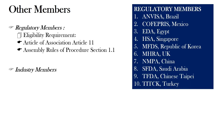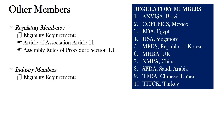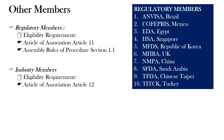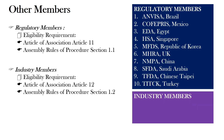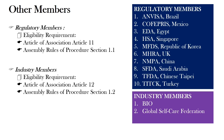Coming to the industry members: the eligibility requirements for industry members are given in Article of Association Article 12 and Assembly Rules of Procedure Section 1.2. Currently, there are three industry members. These are BIO, Global Self-Care Federation, and IGBA.